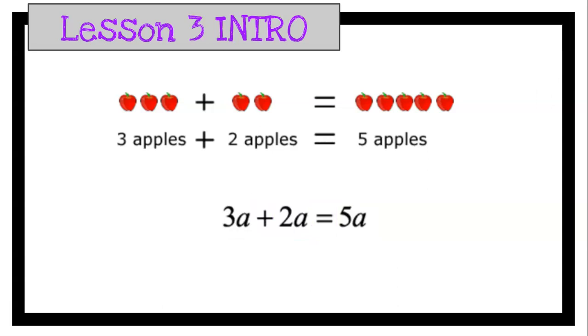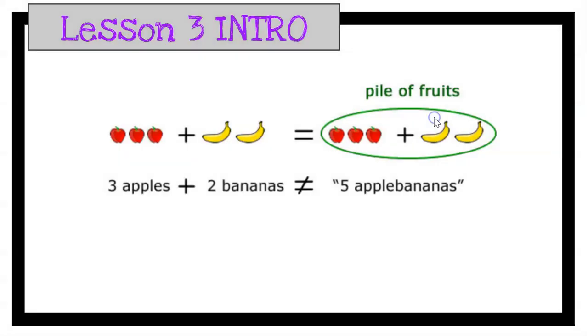But if we switch that around, and we have three apples plus two bananas, we can't combine that and make it five apple bananas. It would just be three apples plus two bananas, and we would just leave it like that, and we couldn't simplify it any further, and that's okay.